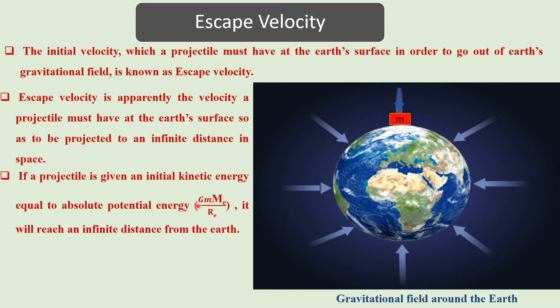If a projectile is given an initial kinetic energy equal to the absolute potential energy — G times small m times capital M_e divided by R_e — it will reach an infinite distance from the earth. We discussed this in the previous lecture: the work done to move an object from earth's surface to far away from earth's gravitational field is known as absolute potential energy. Such a projectile will have escape velocity.